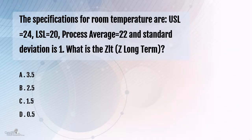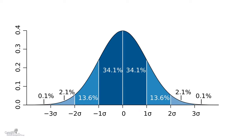The specifications for room temperature are: upper specification limit of 24 degrees Celsius, the lower specification of 20 degrees Celsius, and the process has an average of 22 degrees Celsius and the standard deviation is 1 degree Celsius. What is the Z long-term value?